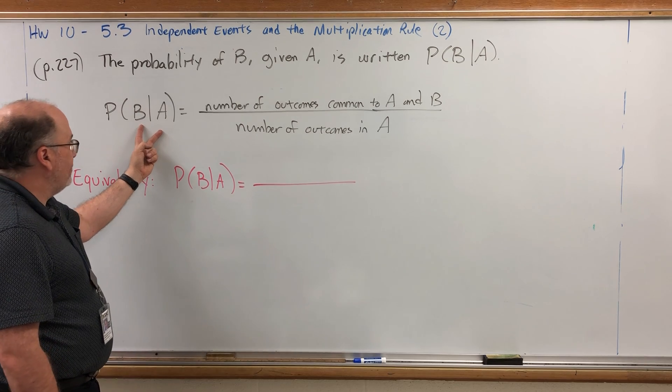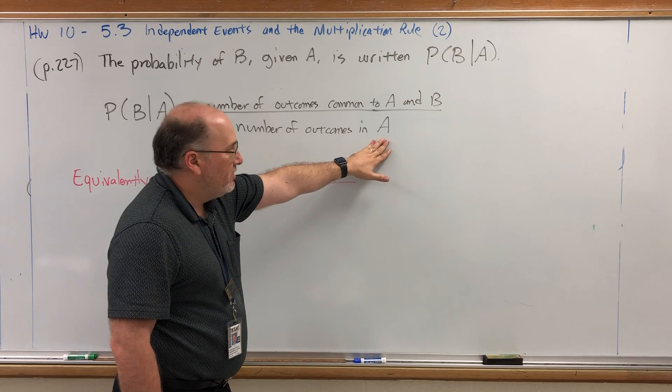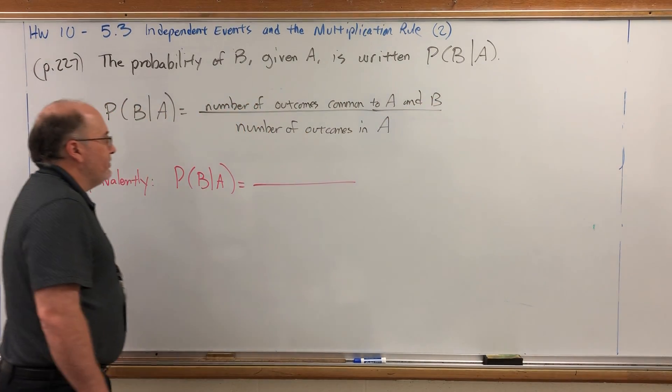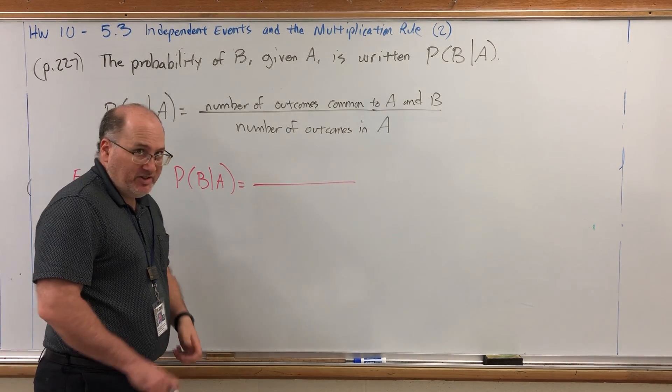Because in order to be counted, you first must be in event A. But in the numerator, you must also belong to event B. So it's the number of outcomes common to A and B, compared to the number of outcomes in A.